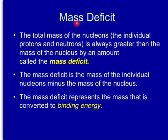Mass deficit. The total mass of the nucleons, that is the individual protons and neutrons, is always greater than the mass of the nucleus by the amount called the mass deficit. The mass deficit is the mass of the individual nucleons minus the mass of the nucleus. The mass deficit represents the mass that is converted to binding energy.